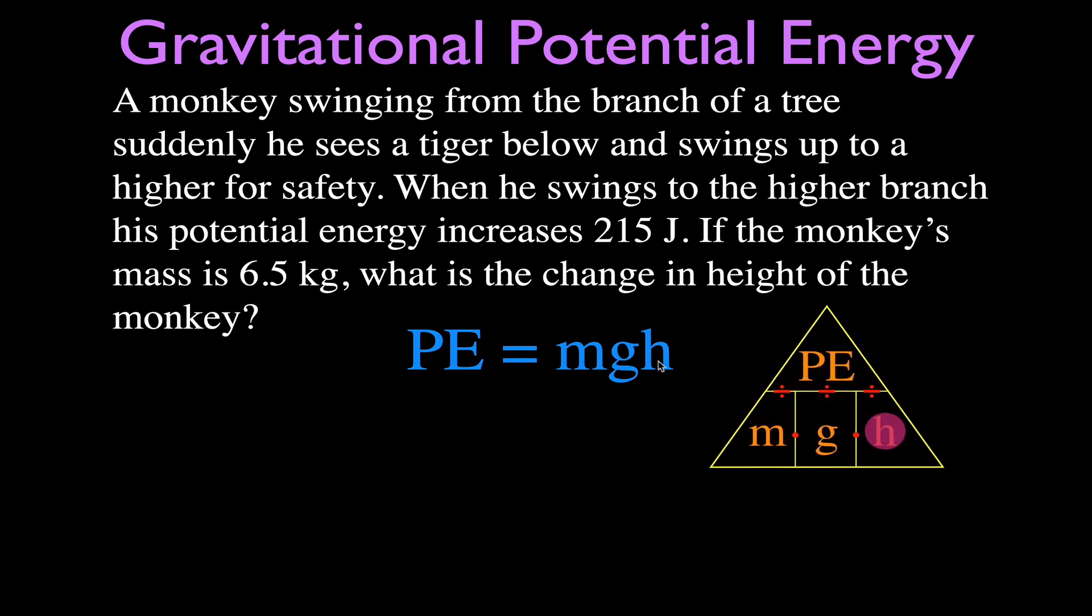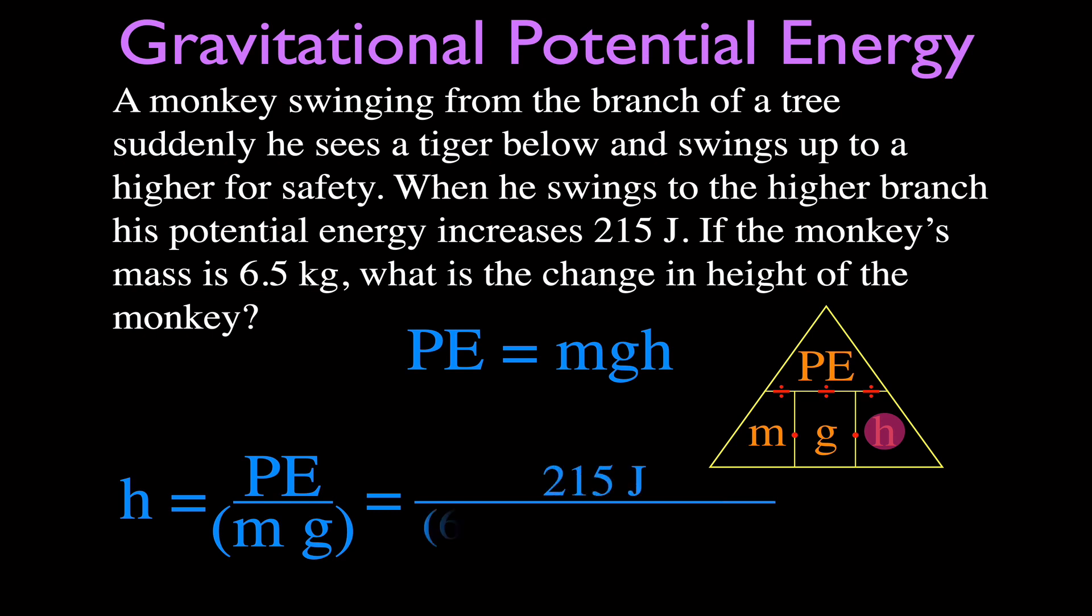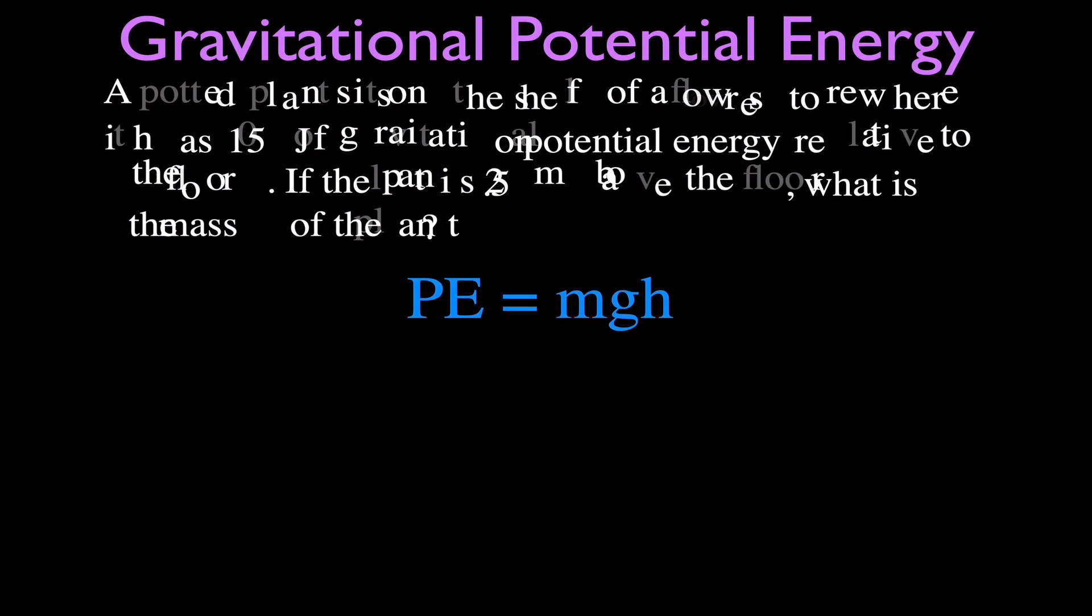We could just get the triangle out. Cover up the h, and you can see h is going to be equal to PE divided by (m times g). So we plug the values in: 215 for the potential energy, m is the mass 6.5, 9.81 meters per second squared. You can see the mass is in kilograms, the energy is in joules, and you come up with that monkey when it saw that tiger swung from one branch to another and must have moved up 3.37 meters to change its potential energy by 215 joules. Let's try one more.